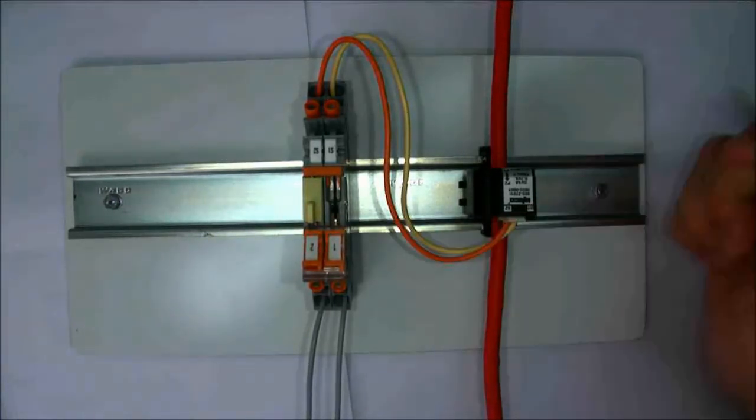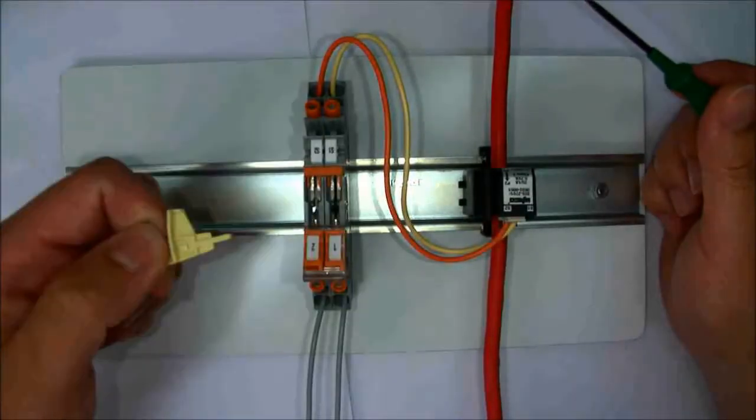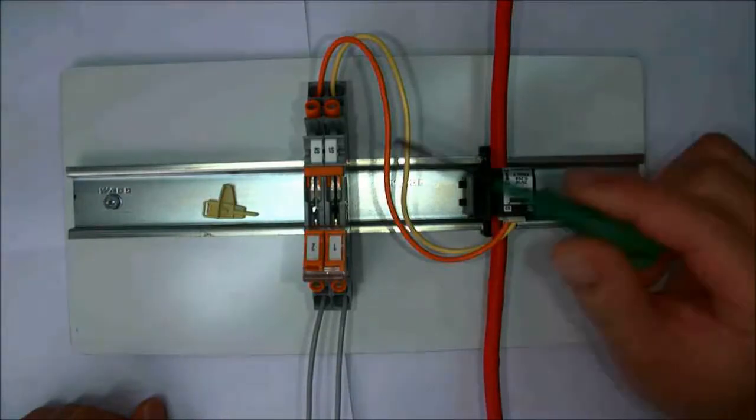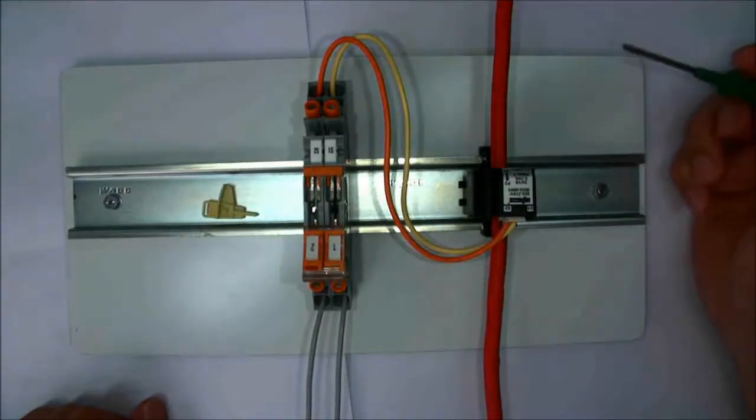The CT terminal block comes with a few accessories. We've got a locking out cap, which is to stop you from disconnecting the circuit, and we've got a jumper bar. Now this jumper bar looks slightly different to our normal ones and that's because it has a different application.